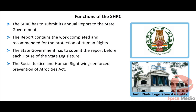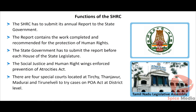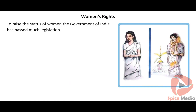The Social Justice and Human Rights wings enforce the Prevention of Atrocities Act. There are four special courts located at Trichy, Thanjavur, Madurai, and Tirunelveli to try cases under the POA Act at the district level in Tamil Nadu.